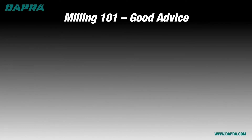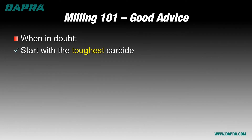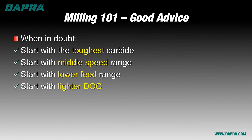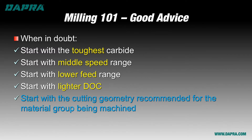We're going to get into specifics regarding what to choose for your edge prep and when, but here are some general guidelines to keep in mind to get yourself off to a good start, especially for a new application where your results aren't a sure thing. First of all, start tough with your carbide to reduce chances of tool breakage. Start in the middle or lower half of the recommended speed range to avoid rapid overheating of the cutting edge. Start in the lower end of the recommended feed range to avoid chipping, and start with less depth of cut than you're ideally hoping for to gauge how the cutting tool, machine tool, and fixturing are handling the cutting forces. Add to these recommendations that you should start with the recommended cutting edge geometry or edge prep that your supplier's catalog recommends for the material being machined.